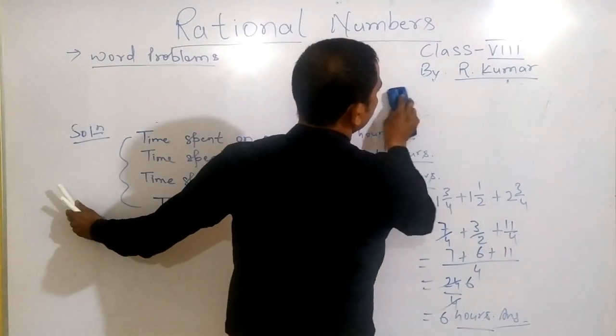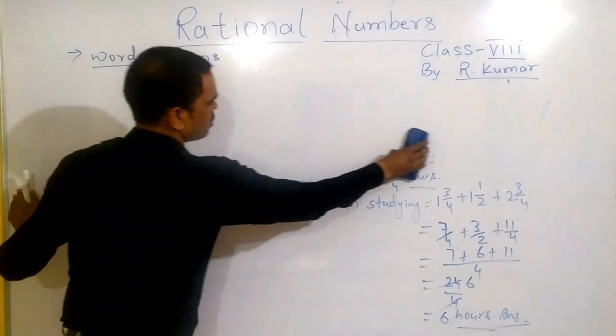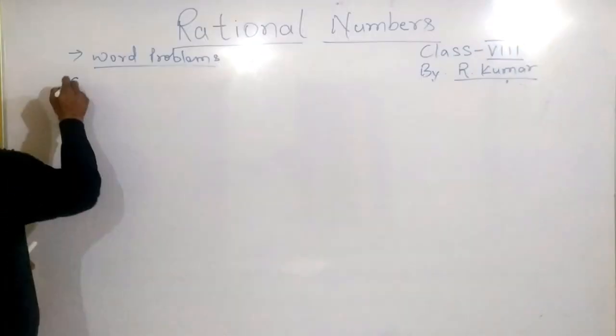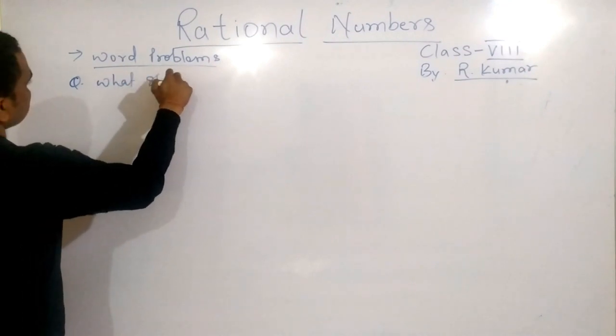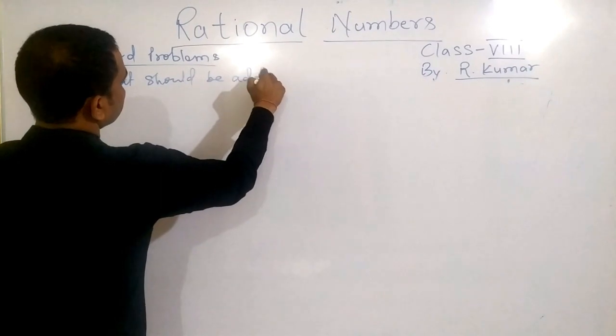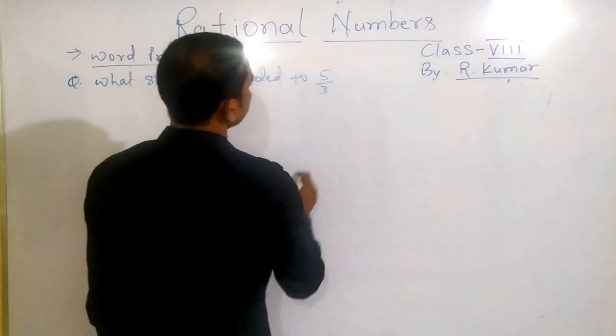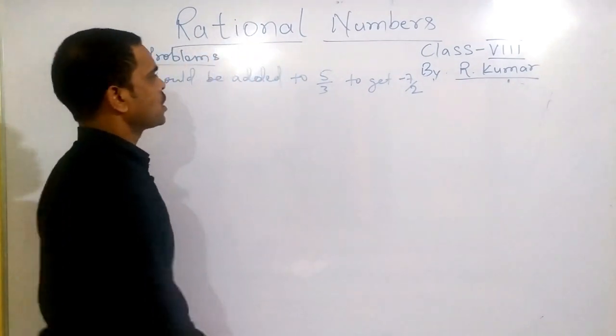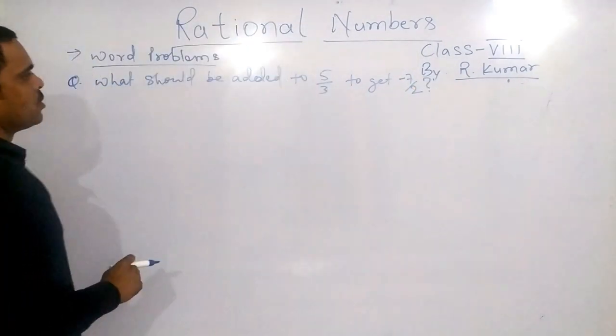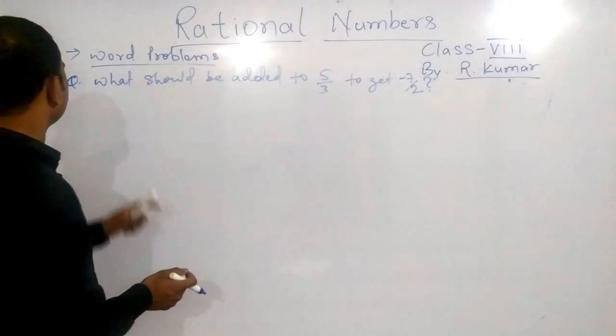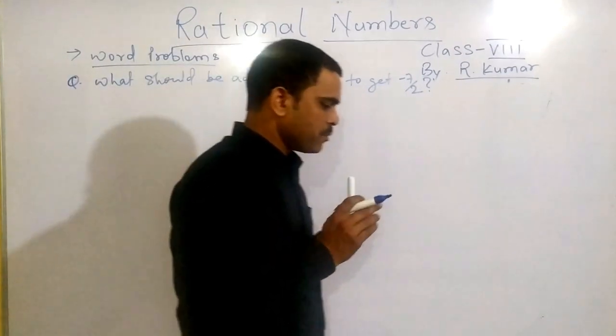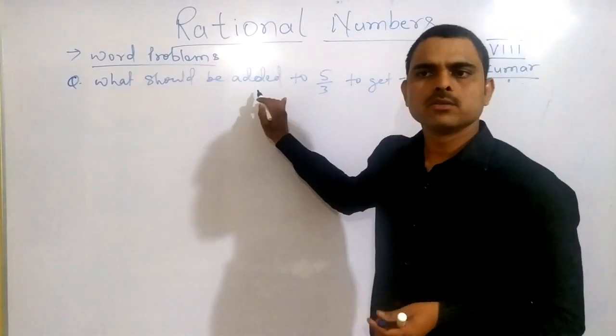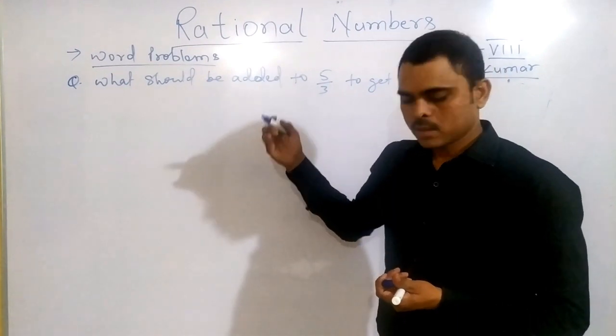The question is: what should be added to 5 by 3 to get minus 7 by 2? You read the question carefully. What should be added - if you get these type of lines in any question, you simply take help of variables. What should be added, you simply consider there is an unknown called x that should be added.